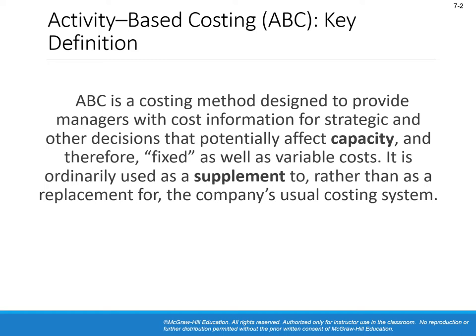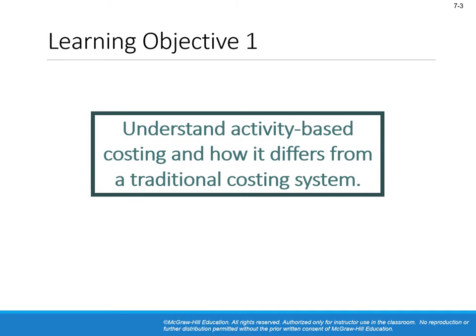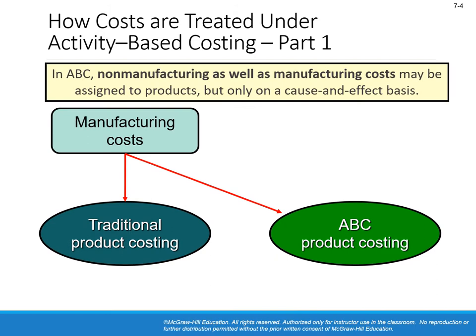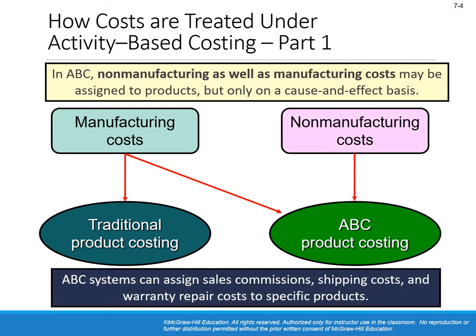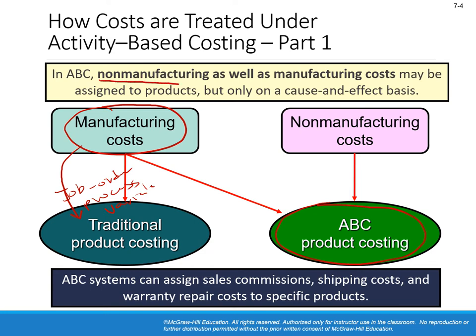Under traditional product costing — whether job order, process, or variable costing — all manufacturing costs are assigned to the product cost. However, under ABC, all manufacturing costs and some of the non-manufacturing costs can be part of the product cost or cost of goods sold. So in ABC, non-manufacturing as well as manufacturing costs may be assigned to product costs.